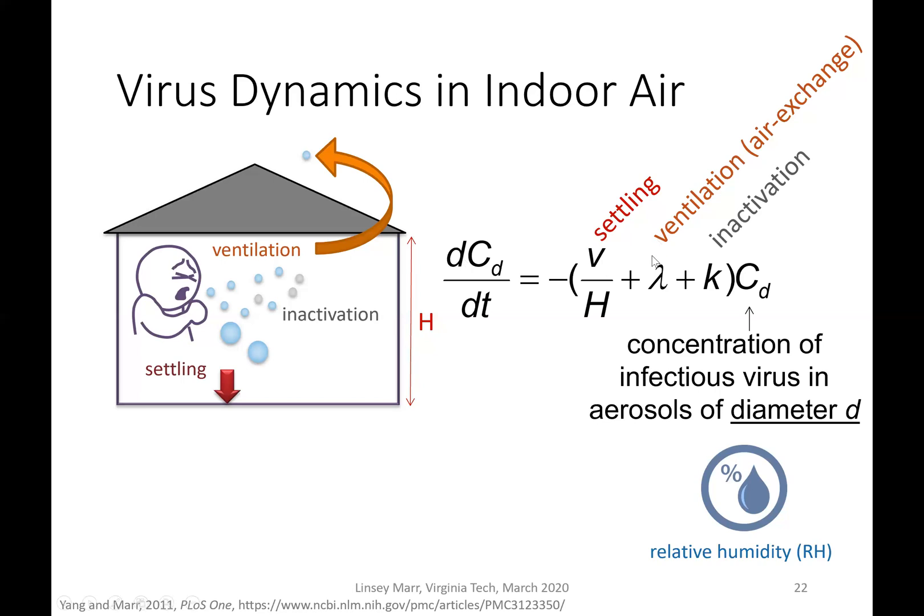Removal by ventilation is represented by lambda, the air exchange rate, which represents how many air changes per hour occur. A typical residential air exchange rate is 0.5 to 1 air change per hour, meaning half to one volume of the room air changes out per hour. We also have k to represent the inactivation rate of the viruses — they slowly decay over time at a certain rate, and some go faster than others.